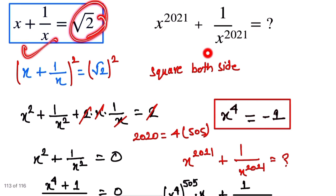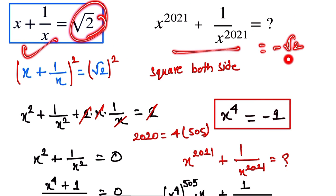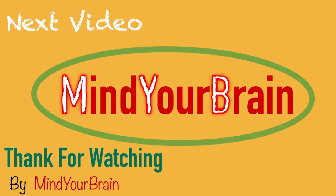The value of x^2021 + 1/x^2021 is -√2. Thank you so much for watching.